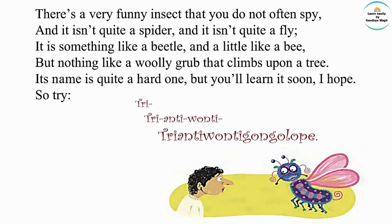Its name is quite a hard one but you will learn it soon, I hope. So try, try, try — anti-wanti, try anti-wanti gongolap! Here the poet is in a very imaginative mood; he talks about an imaginary insect which he calls the Triantiwontigongolope.